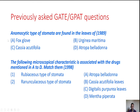Question two: Anemocytic type of stomata are found in the leaves of which plant? Using the mnemonic, anemocytic stomata are found in the bad alphabet group. Foxglove means Digitalis, and Atropa belladonna — so the answer here is Digitalis (foxglove).